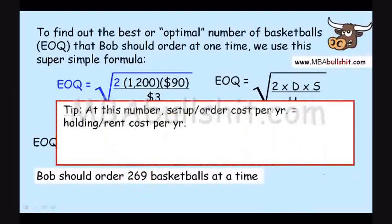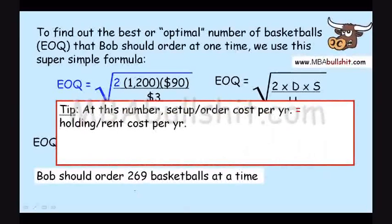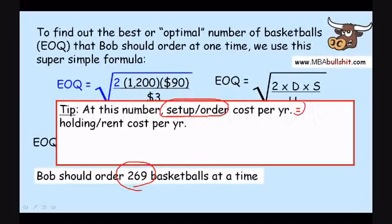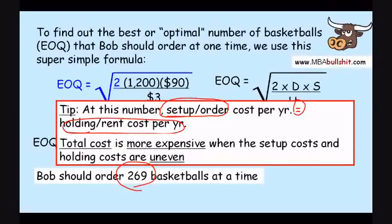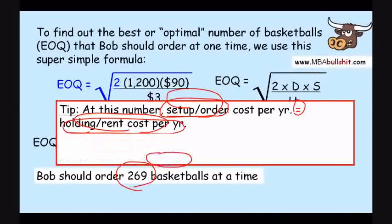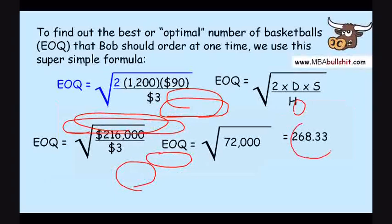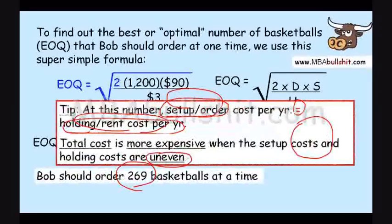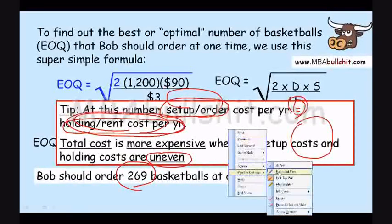Here's a tip. At this number of 269 basketballs, your setup or ordering fee per year will equal your holding and rental cost per year. The total cost is more expensive when the setup cost and the holding cost is uneven, when they are not the same. What we're actually doing with this formula is we're finding the number with which your setup cost per year or ordering fee per year will equal your holding and rental cost per year. That's how simple it is.